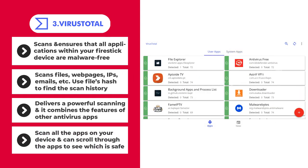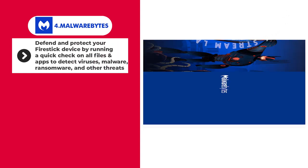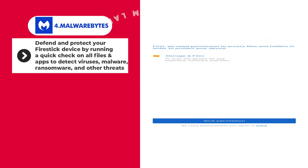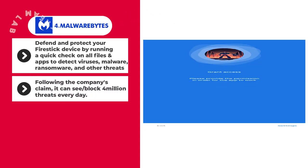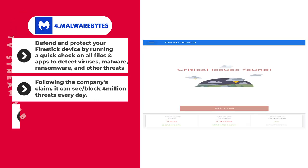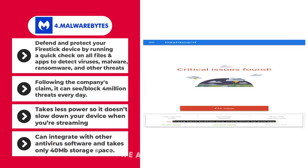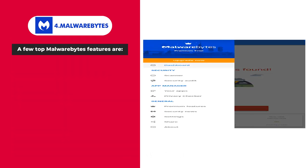Once you open the VirusTotal app, it begins to scan all the apps on your device. After the scan, you can scroll through the apps to see which is safe. Malwarebytes can defend and protect your Fire Stick device by running a quick check on all files and apps to detect viruses, malware, ransomware, and other threats. Following the company's claim, it can see and block four million threats every day. During a scan, the app takes less power so it doesn't slow down your device when you're streaming.